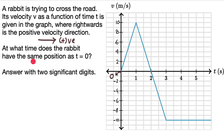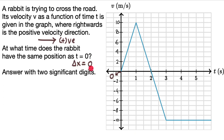The question is asking for another time instant — could be 1 second, 1.5, 2, 2.5, 3, 3.5. At what time does the rabbit again have a displacement of 0? So when does delta x again become equal to 0?